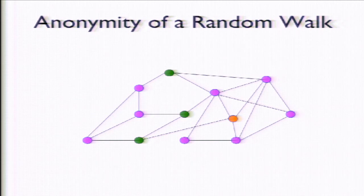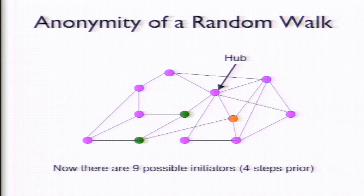And when we take one step away from the hub node, it turns out that any of these, I think there should be more, oh there we go, that any of the purple nodes now, and I think I counted this as nine, could be a possible initiator four steps. So when we're in a social network, as long as we have a block in the social network that is long enough to get us past a hub or two, then we're going to get a pretty good amount of anonymity in terms of where could this random walk have come from.